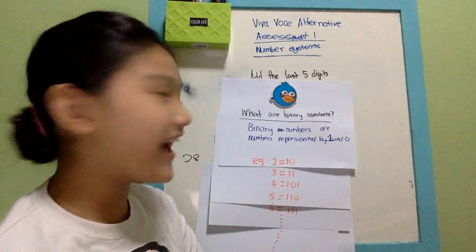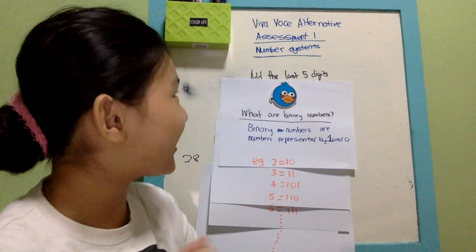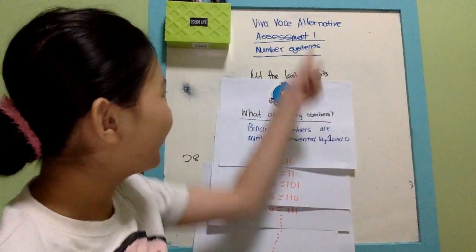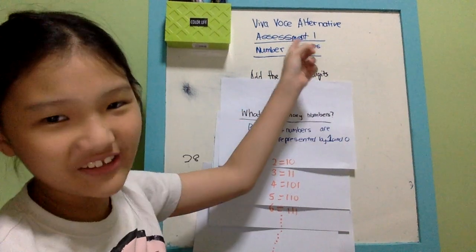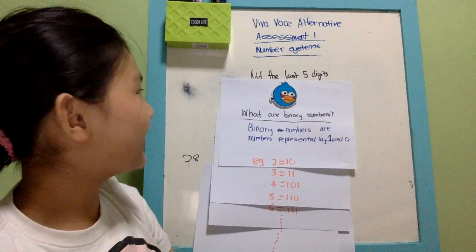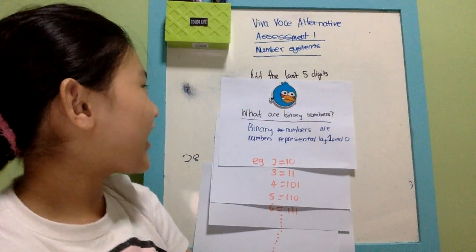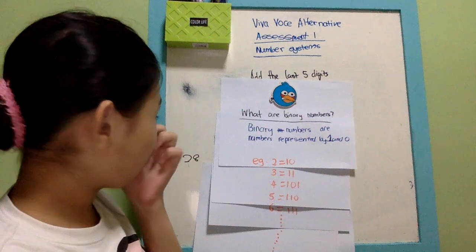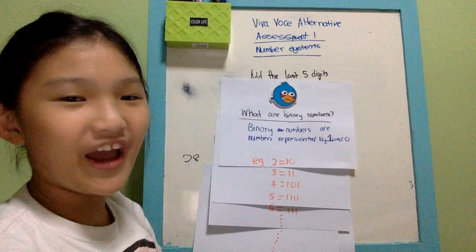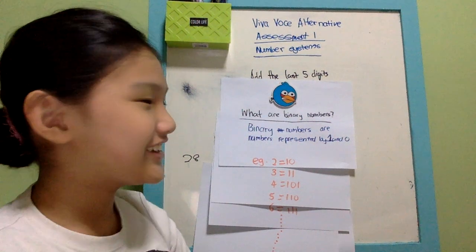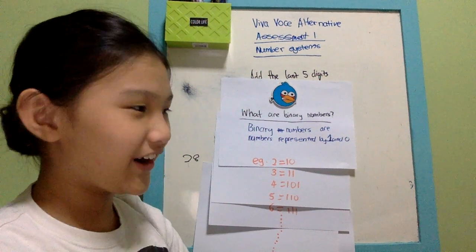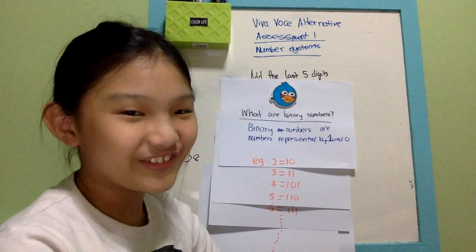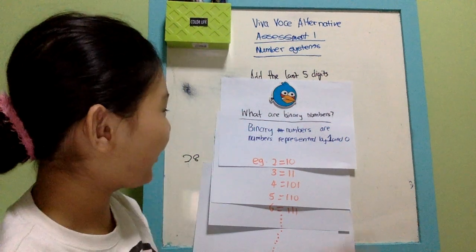Hi everybody. I'll be doing the VIVA virtual alternative assessment, and it is about number systems. I was given two tasks to complete, and these two tasks involve binary numbers.